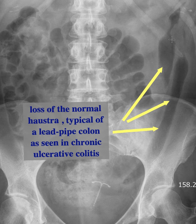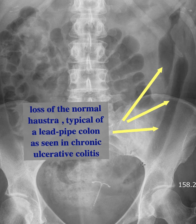This seems to be limited to the distal transverse colon and descending colon. This is a feature of usually chronic colitis, most commonly ulcerative colitis, rather than an acute colitis which would present with thumbprinting rather than a featureless colon.